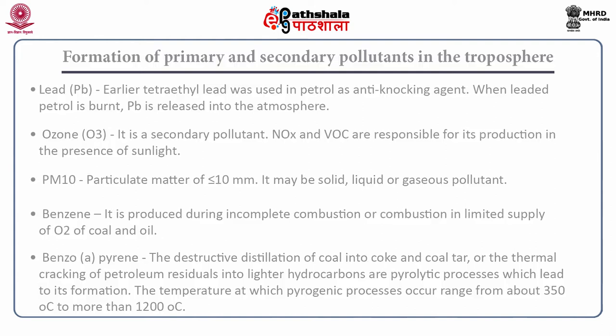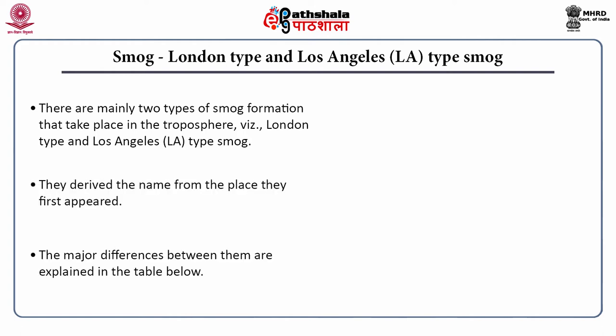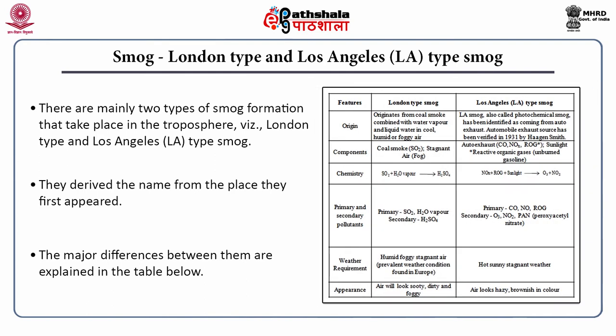We will now see smog. There are two types: London type and Los Angeles type, deriving their names from where they first appeared. London smog originates from coal smoke combined with water vapor and liquid water in cool, humid or foggy air. Los Angeles type smog, also called photochemical smog, has been identified as coming from auto exhaust, verified in 1951 by Haagen-Smit. The components in London type smog are coal smoke containing SO₂ and stagnant air with fog. In LA type smog, components are auto exhaust containing carbon monoxide, NOx and reactive organic gases, plus sunlight.